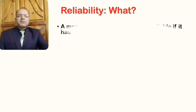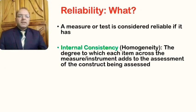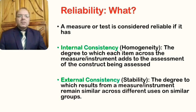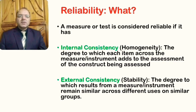Moving on to explaining what reliability actually is, we can think in terms of the characteristics of a test. If a measure has these two main characteristics, we would consider it reliable. The first is internal consistency, also called homogeneity — the degree to which each item across the measure is directed to the assessment of the construct being assessed.